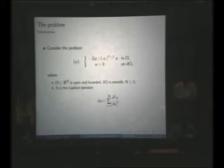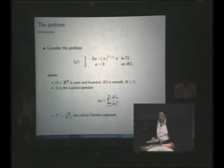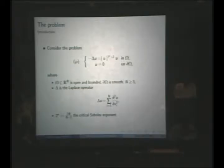This delta is just the Laplace operator, so this is a PDE. And this number 2-star is a number which depends only on n, and it is called the critical Sobolev exponent.